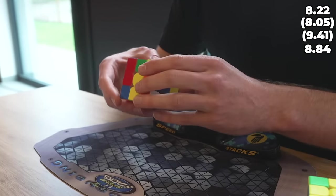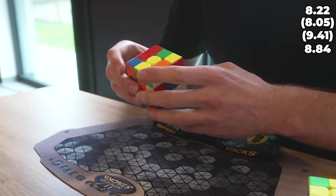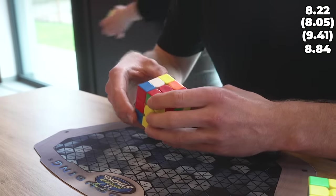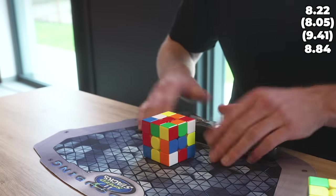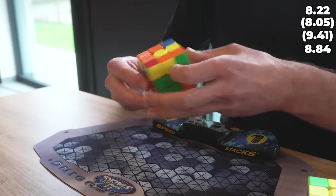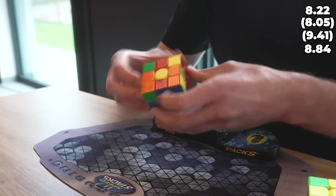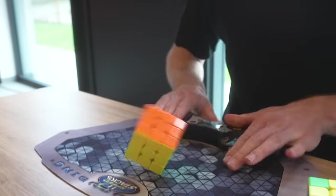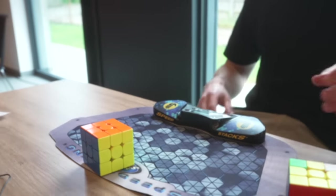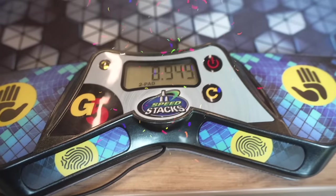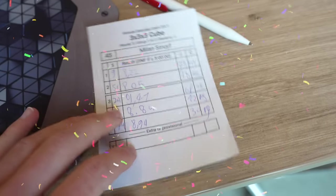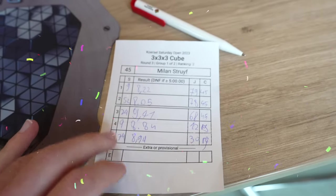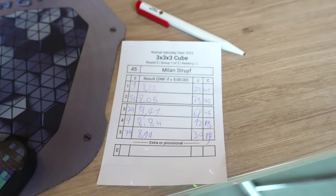But the last solve could make for a PR average of 5, not national record anymore because I think the best possible average at this point was 8.3. But anyways wide cross I think and here we go, nice cross into a three mover but right here you can see that I had a major lockup which was really unfortunate. Sledgehammer, OLL and a really fast J perm.